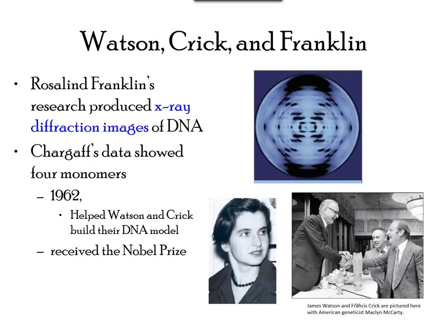This slide represents some historical information about the discovery of DNA. In the early 1950s, Francis Crick and James Watson proposed a structure of DNA and were awarded a Nobel Prize. However, their work had contributions from the work of Rosalind Franklin. Rosalind produced X-ray diffraction images of DNA that were essential to understanding the double helical nature of DNA. However, at the time of the award she had passed away, hence her name and contribution sometimes did not get recognized.